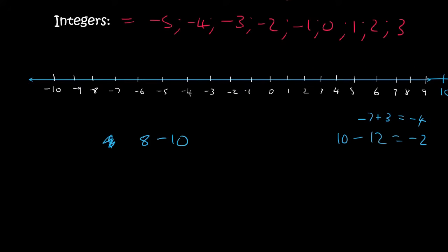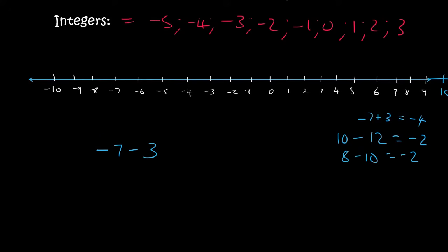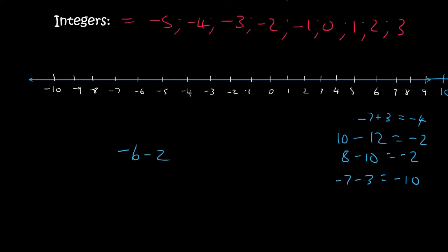8 minus 10 — so you start at 8 and you go 10 back. Why 10 back? Because it said minus. And so you end up at minus 2. Minus 7 minus 3 — so you start at minus 7, and because we're minusing, we go left — 1, 2, 3 — and so you end up at minus 10. Minus 6 minus 2 — we start at minus 6, and because it's a minus, we go two places to the left, and that's minus 8.